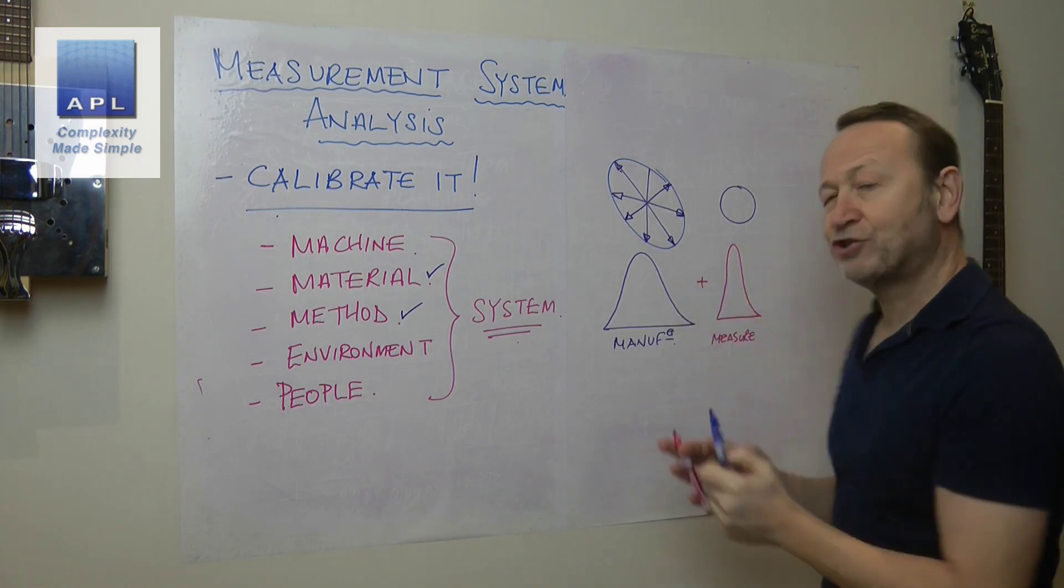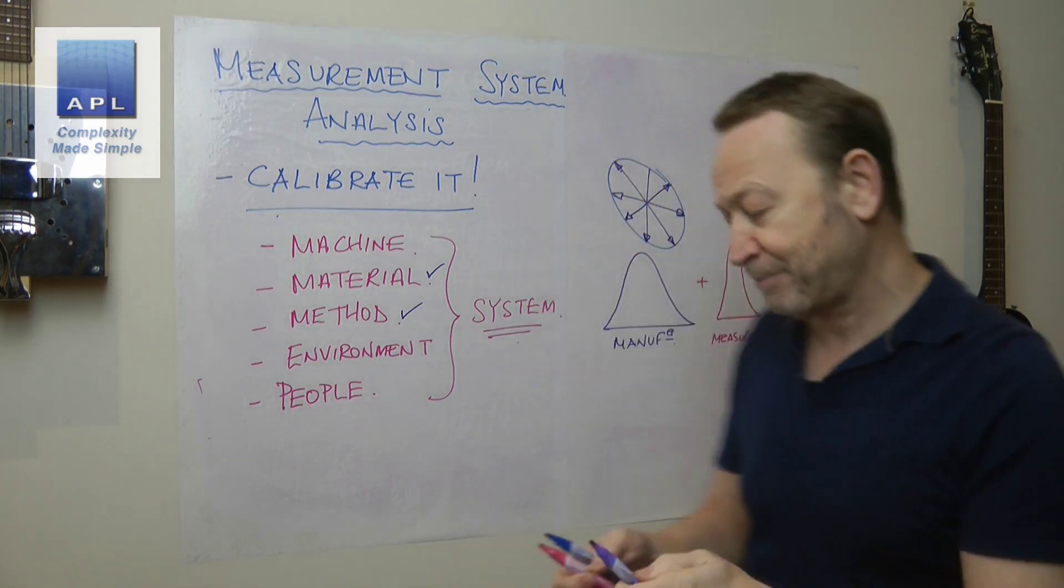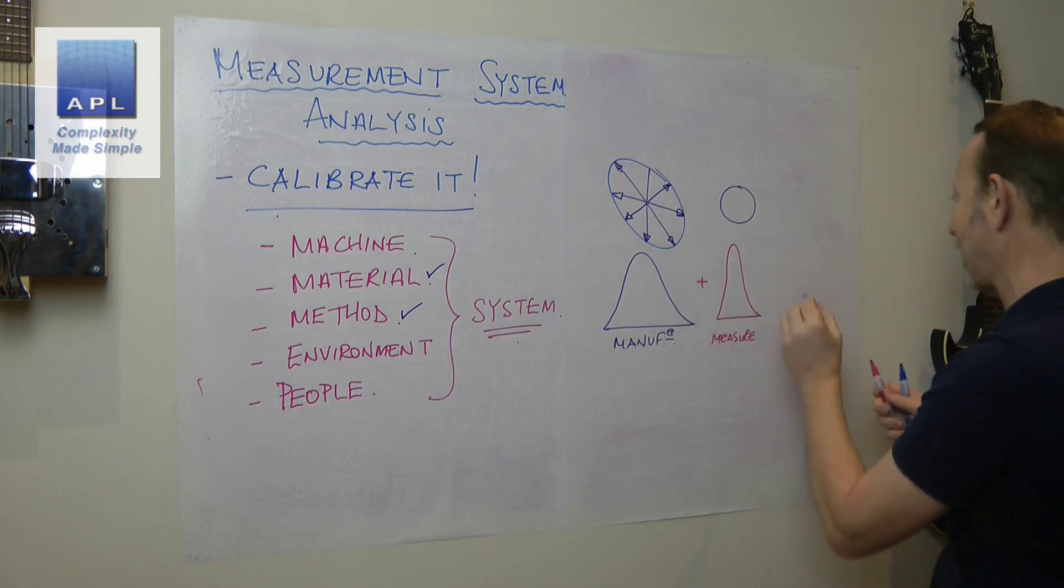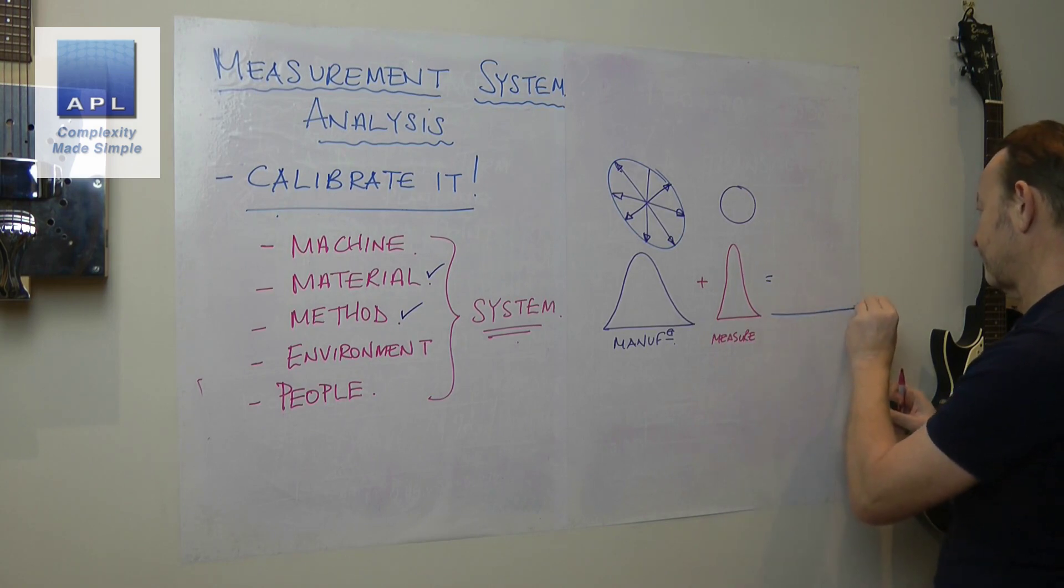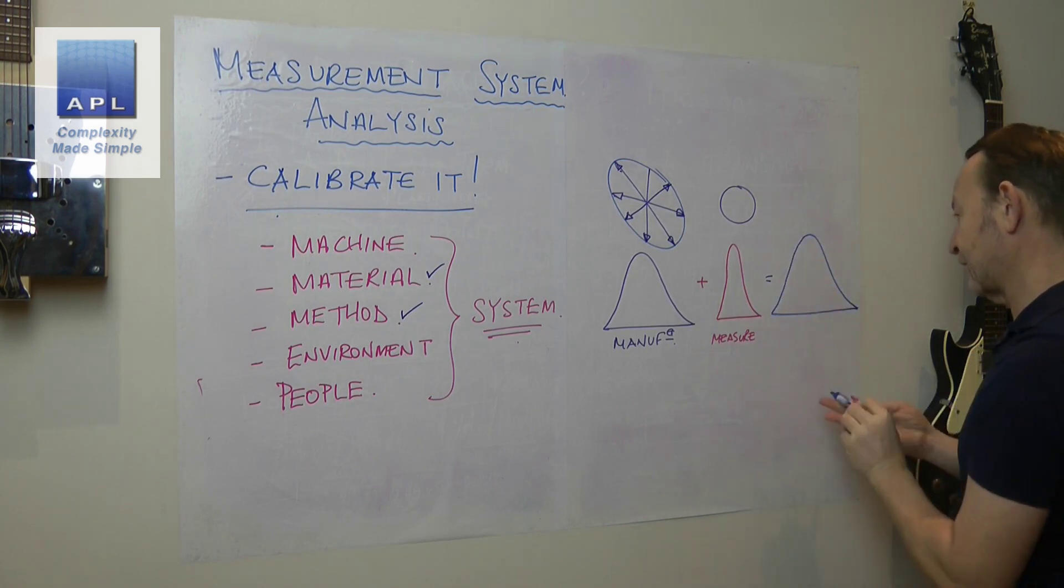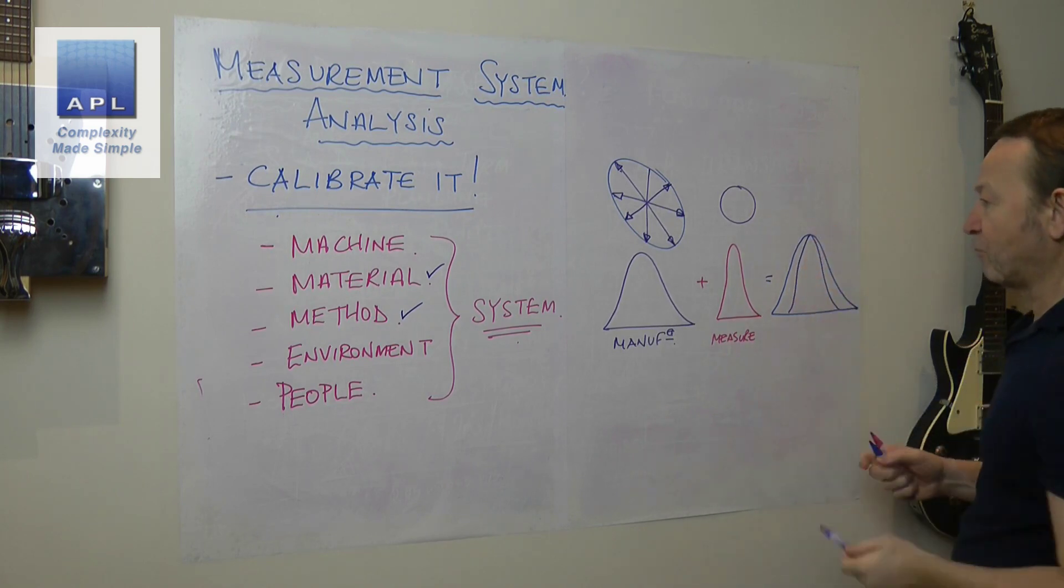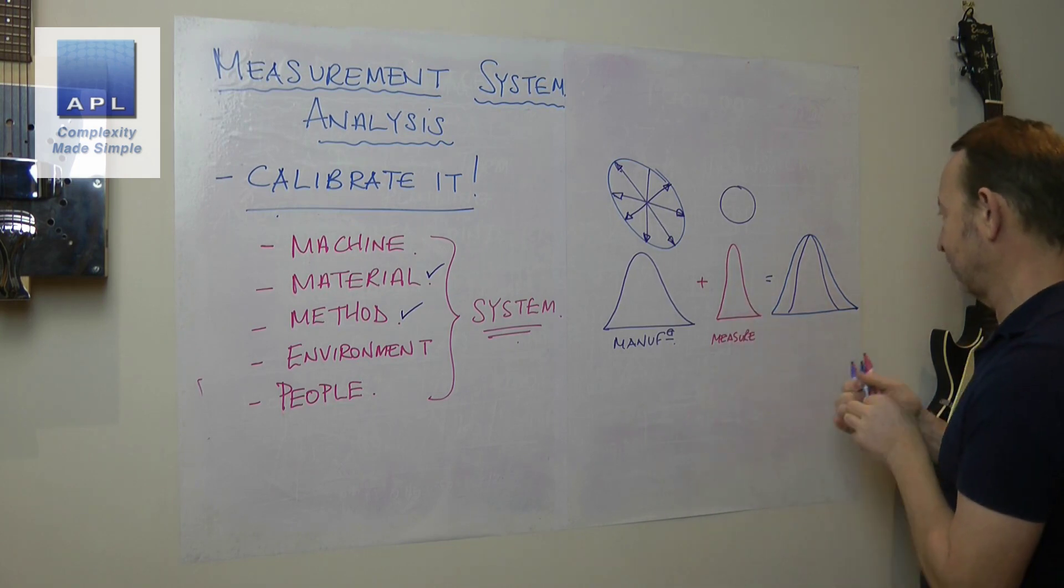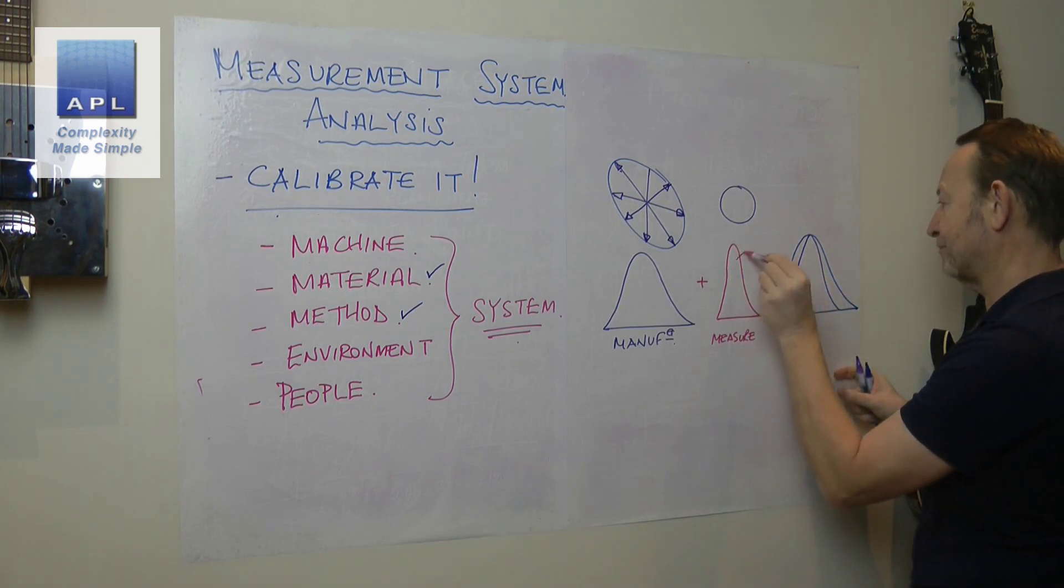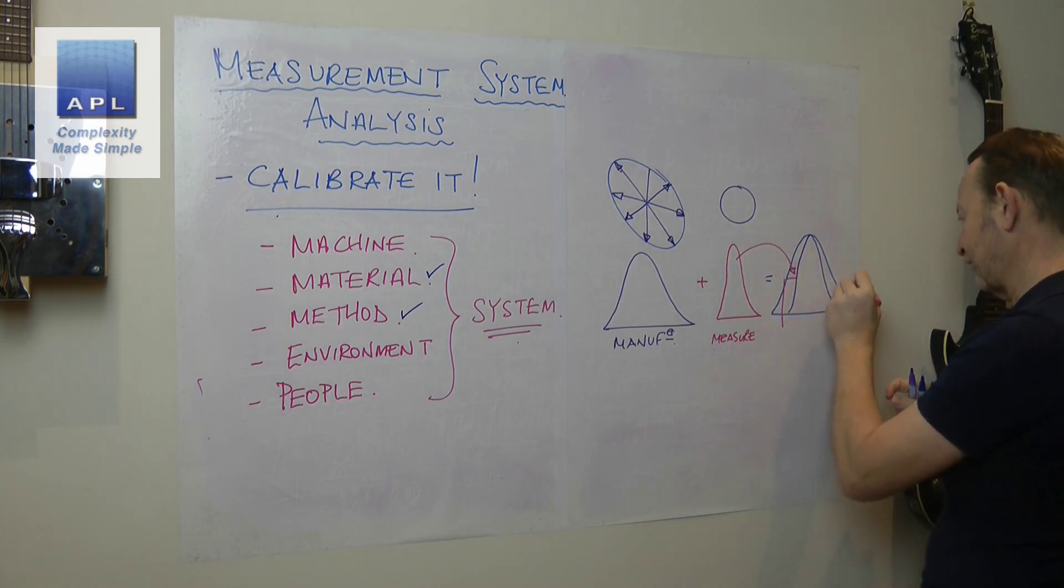And what you actually see when you plot a graph, draw a histogram, do a capability study, whatever it happens to be, you see these two added together. So what you end up seeing is something that is wider than what was originally there. So this is the original distribution here, it looks bigger because this adds to it and creates that inflation.